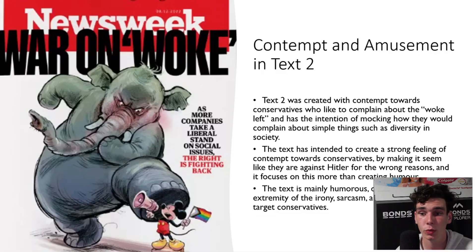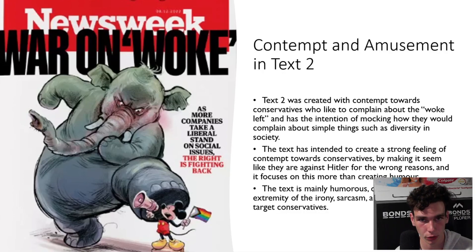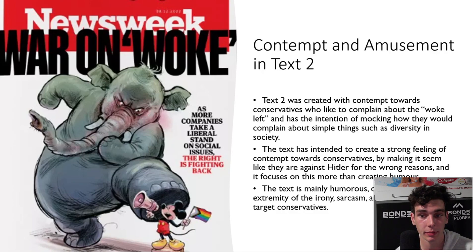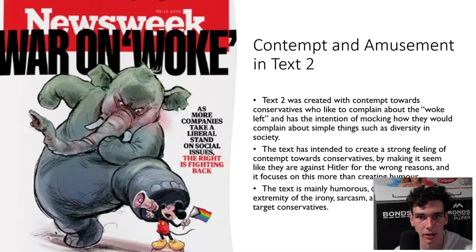Text 2 was created with contempt towards conservatives who were often known to complain about the "woke left." The text mocks how they can complain about liberal things in society being too inclusive, comparing them to Nazis and portraying them as preferring the real Hitler over the fictional diversity-supporting Hitler. The text is mainly humorous due to the extremity and absurdity of this comparison.